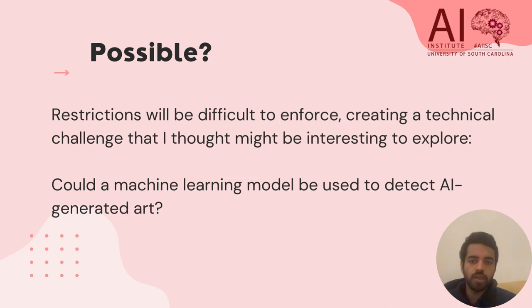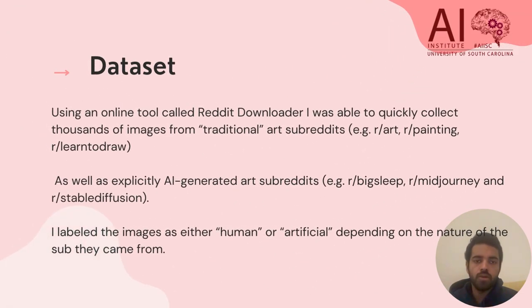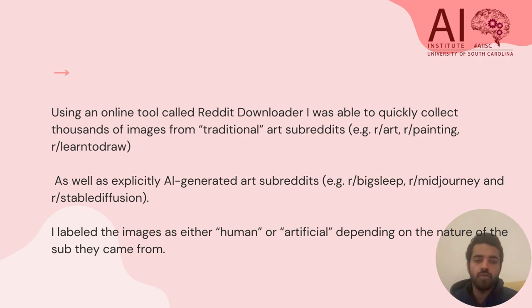Using an online tool called Reddit Downloader, I was able to quickly collect thousands of images from traditional art subreddits — for example, art, painting, and learnToDraw — as well as explicitly AI-generated art subreddits such as BigSleep, Midjourney, and Stable Diffusion. I labeled the images as either human or artificial depending on the nature of the subreddit they came from.